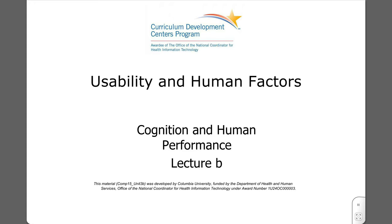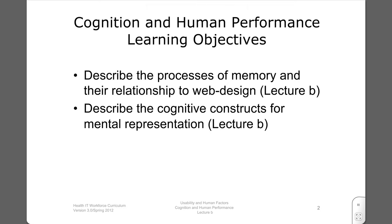Unit 3B, Cognition and Human Performance. In this class, our goal is to: 1. Describe the processes and structures of memory. 2. Describe the cognitive constructs for mental representation, including schemata and scripts.